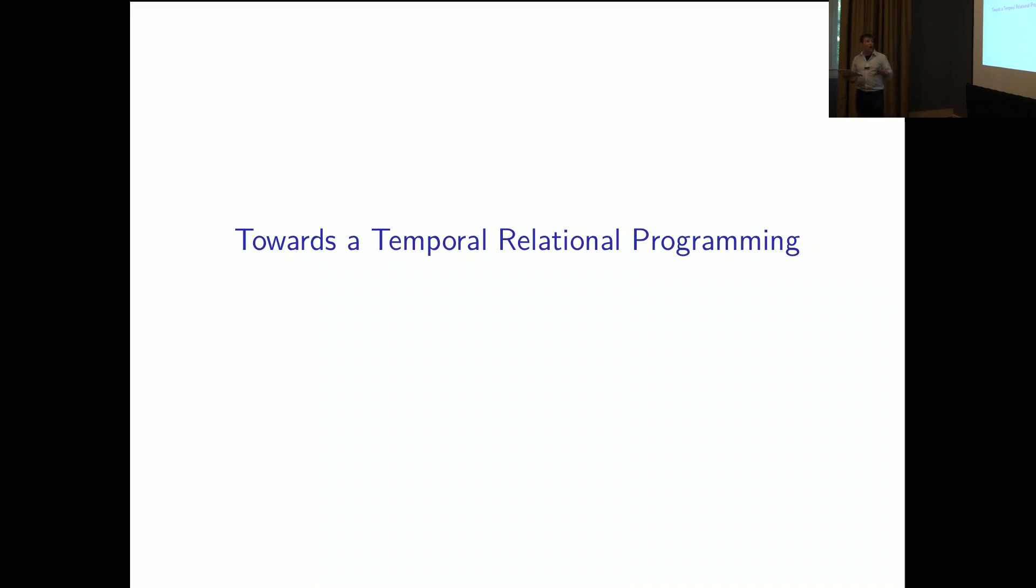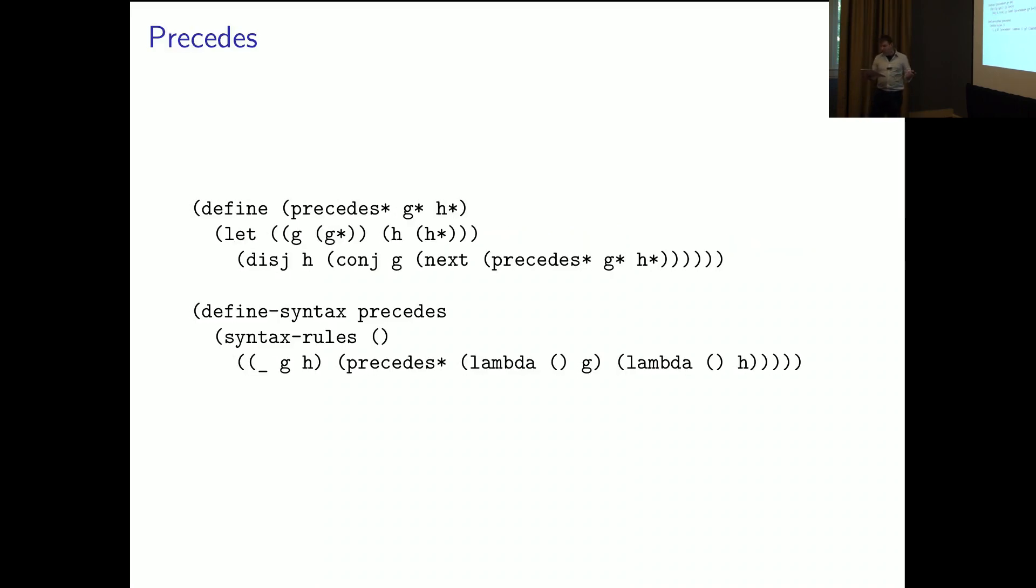So, most of those temporal operators that we pointed out earlier need to be defined recursively. And when doing that, it's important to control when the goal is constructed since that might refer to a stateful resource. For temporal microkanren, we do this by wrapping goals in lambdas, which are then evaluated when they're supposed to be evaluated. The definition precedes, which is modeled on the weak until operator, stipulates that a goal w holds at least until a second goal h holds, shows how that can be done.